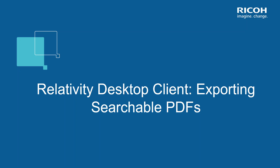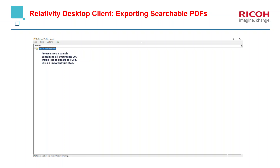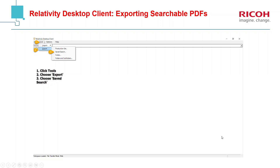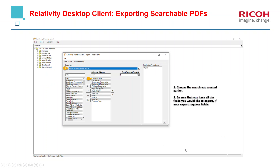Finally, I wanted to show you exporting searchable PDFs using the Relativity Desktop Client. Make sure you create a saved search — everything starts with a saved search. Then you select your workspace. We are going to choose documents or search in Los Poyos Hermanos, that's my favorite workspace. Then you go to Tools, you go to Export, you go to Save Search, and you make sure you select the search that you created earlier.